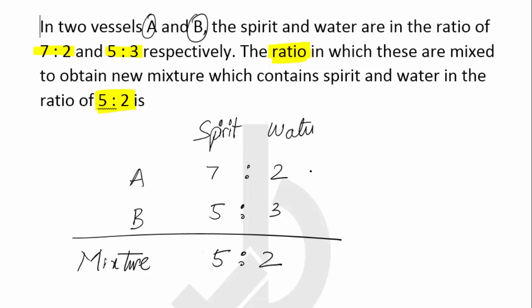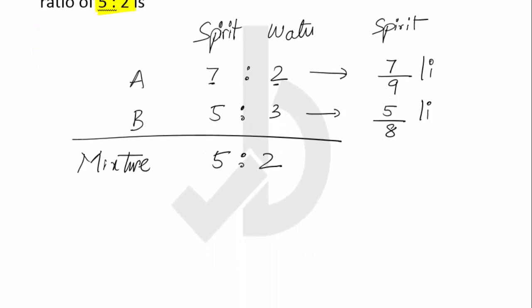Now, in container A, the quantity of spirit is 7 parts out of 9 parts. We add this, and to overall 9 parts we have 7 parts of spirit. Here 5 parts of spirit are there overall out of 8 parts. In order to get the final, here we have 5 parts of spirit out of 7 parts. So these are the quantities being mentioned.